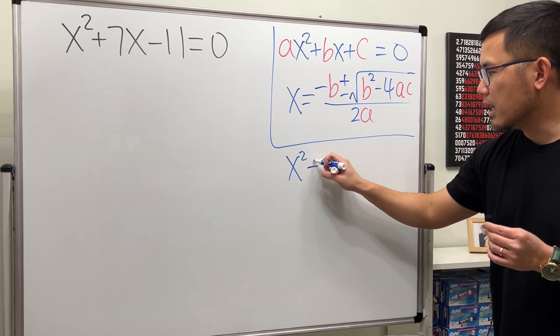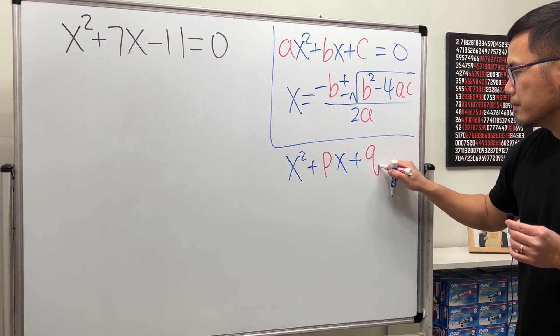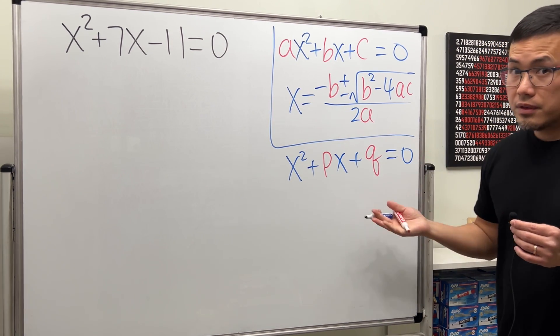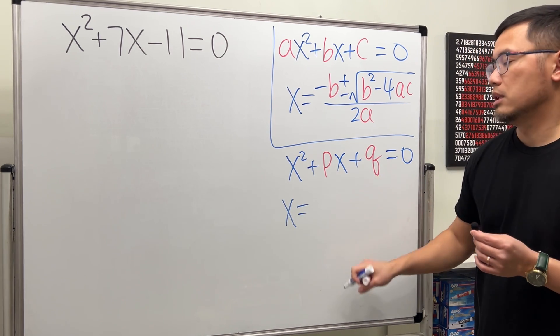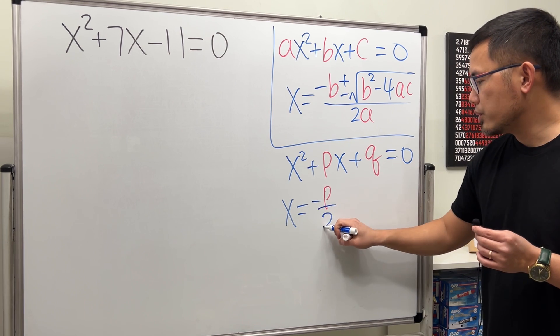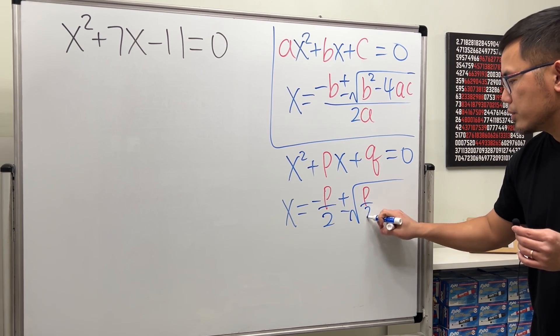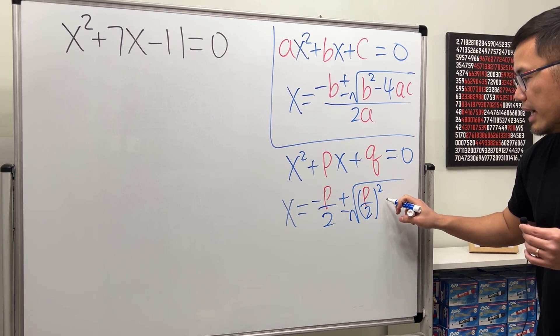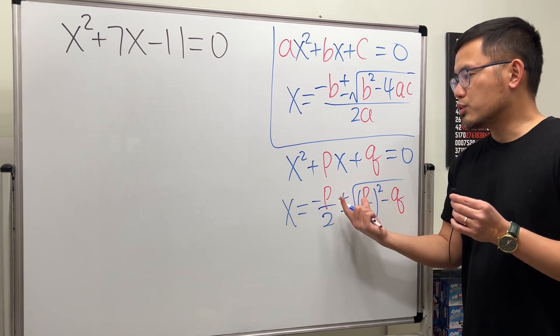x² + px + q. If this is what we have, then we can say x = (-p/2) ± √((p/2)² - q). So as you can see, this right here is simpler.